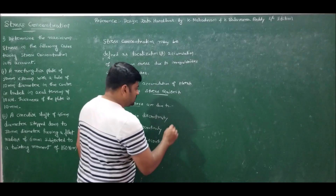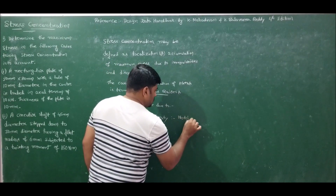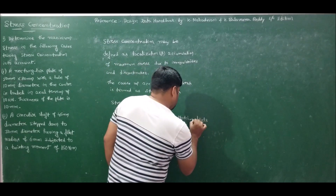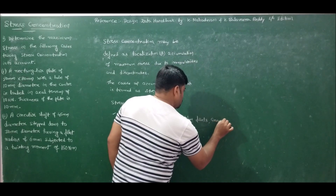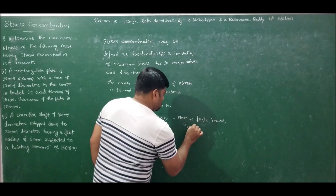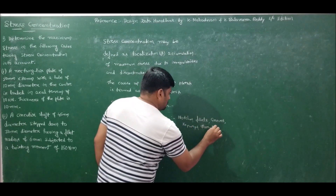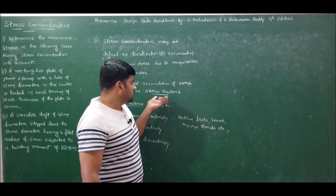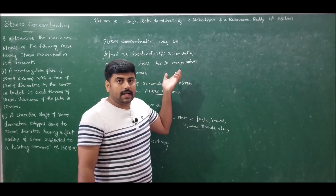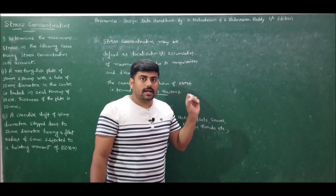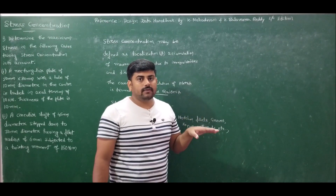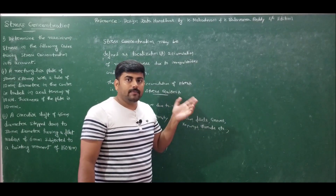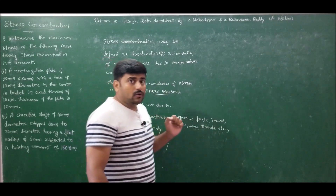Examples of geometric discontinuities include notches, fillets, grooves, keyways, threads, etc. These geometric discontinuities act as stress risers which cause accumulation or localization of maximum stress. These points act as initiators for cracks, which propagate over time and lead to failure of the material.